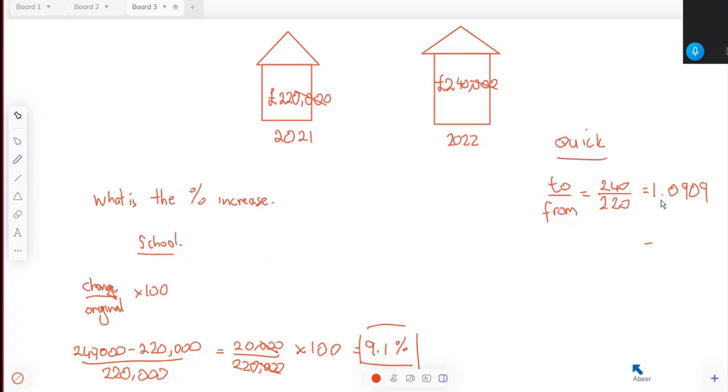240 divided by 220 gives you 1.09 recurring. If we look at these digits here, remember the first two digits after the decimal point—that tells you that's nine percent, and this nine is going to round that up to a one. So there's your 9.1. Look how much faster this is. You got to get the change, subtract it, put it over the original, then times it by a hundred. It's a lot of work.